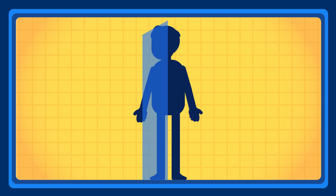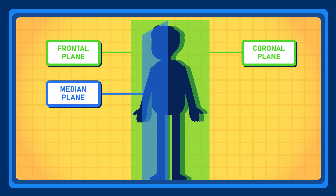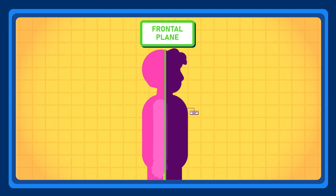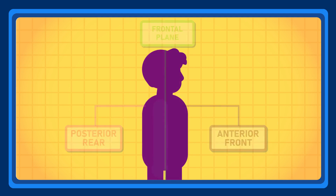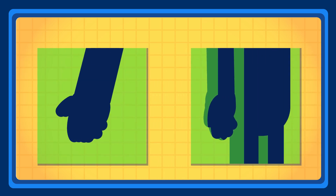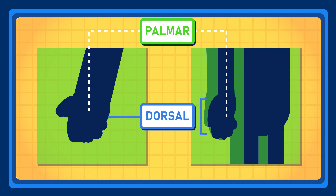Frontal or coronal planes. This plane runs vertically and forms a right angle with the median plane. It divides the body into two parts: front or anterior, and back or posterior. Sometimes, ventral and dorsal are also used instead of anterior and posterior. However, when describing the hand, other terms are used: palmar, when talking about the palm, instead of anterior, and dorsal to describe the back of the hand, instead of posterior.